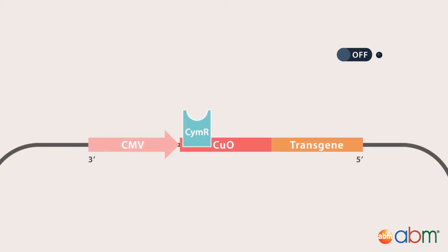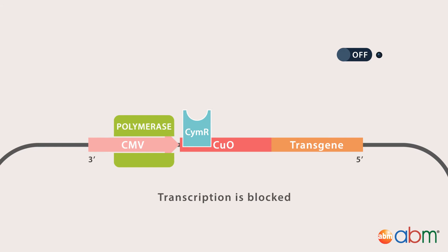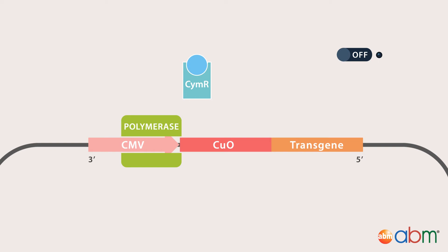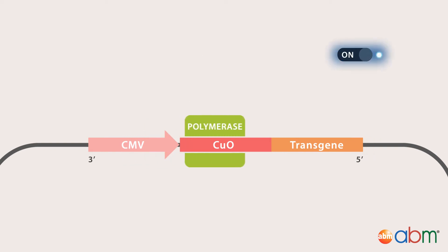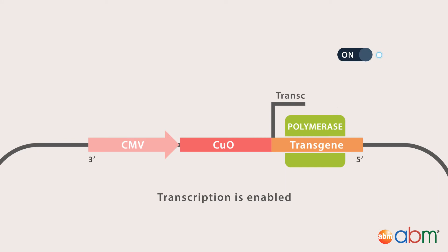The cumate operator sequence is found downstream of a promoter and upstream of the transgene. When cumate is not present, SIMR binds with high affinity to the cumate operator sequence and blocks transcription of the transgene, leaving the system in an off state. However, as soon as cumate is added, it associates with SIMR and prevents it from binding to the cumate operator. This switches the system on and allows transcription to proceed unhindered.